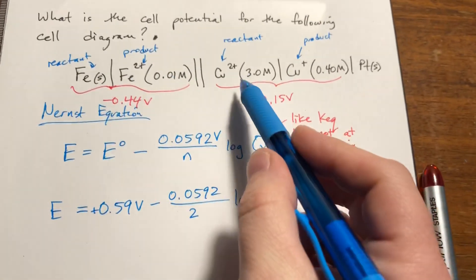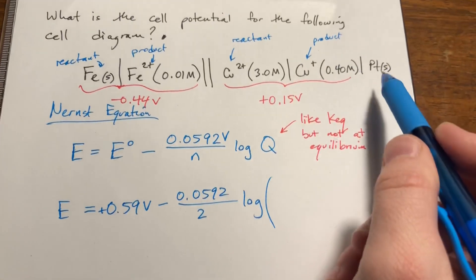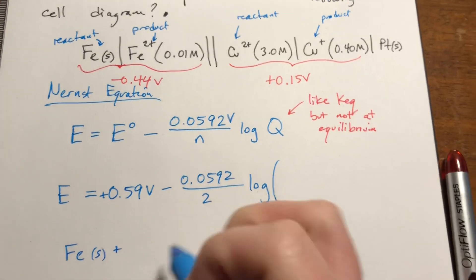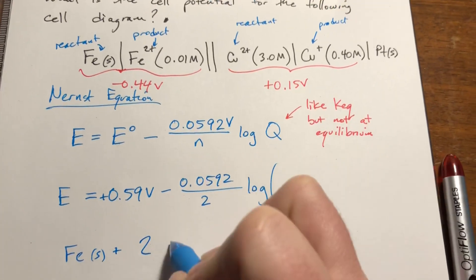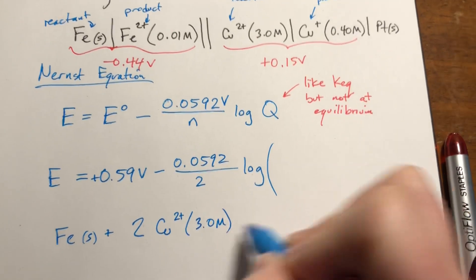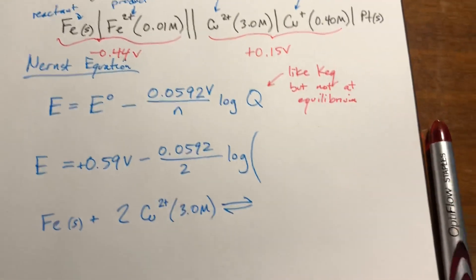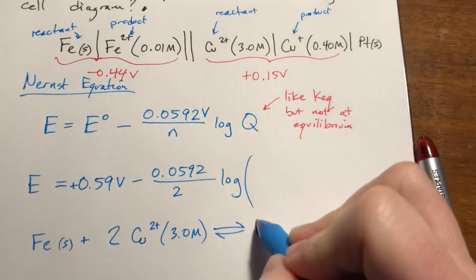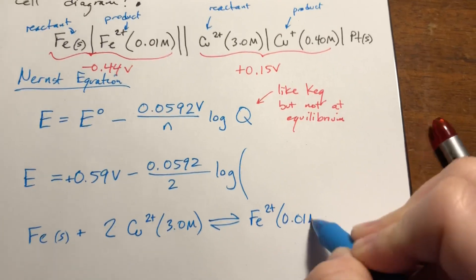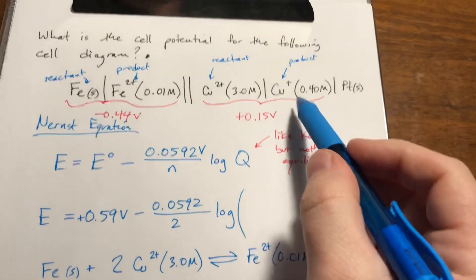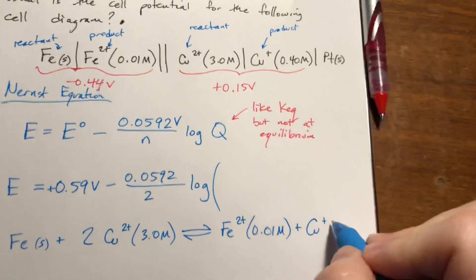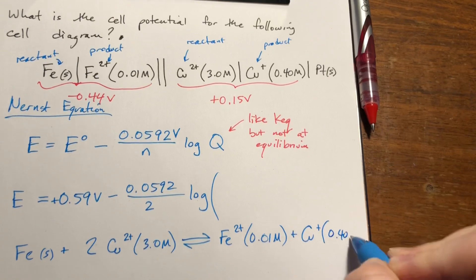So reactants, reactants, and these are all going to be doubled. We're ignoring the platinum, it's just an electrode. So it's in a reaction with, this is a product, iron 2+, which is at 0.01 molar, plus copper 1+, which is at 0.40 molar.